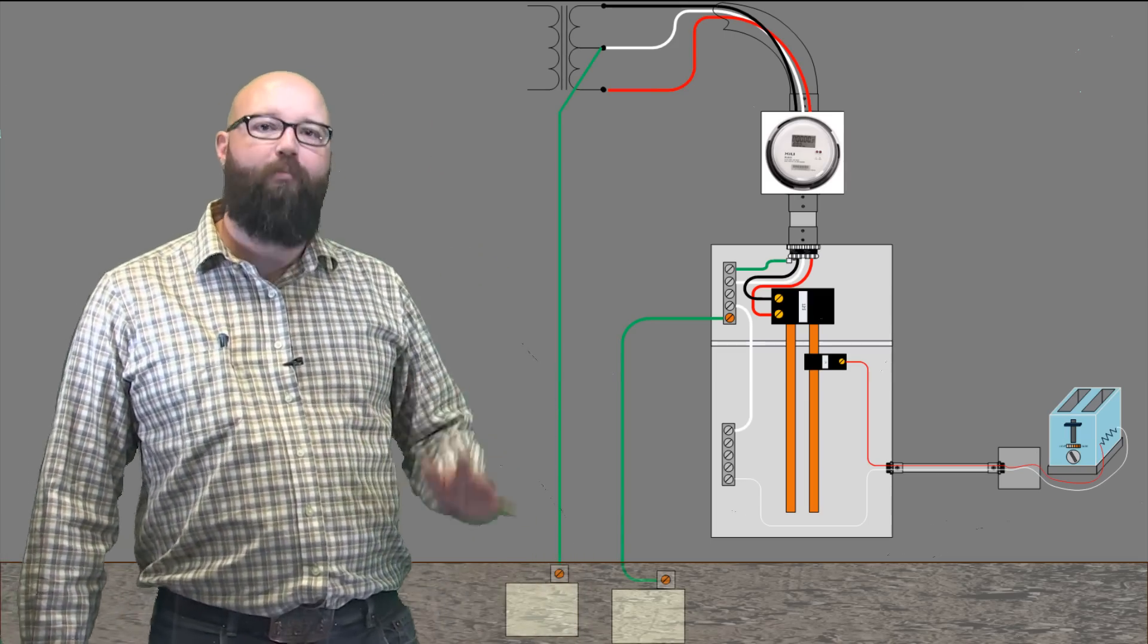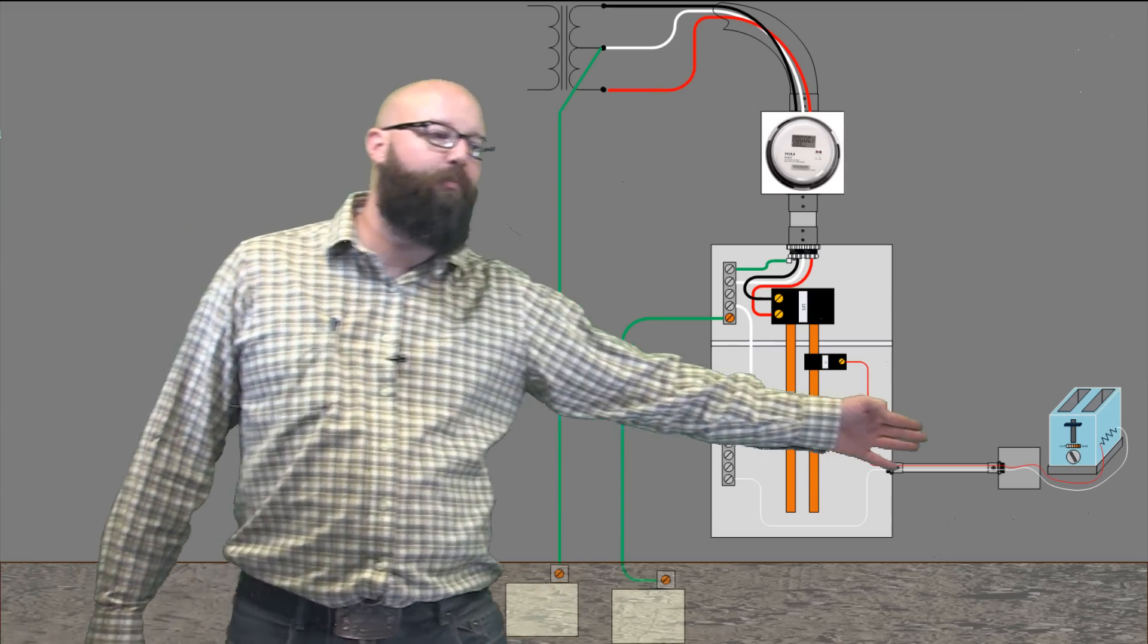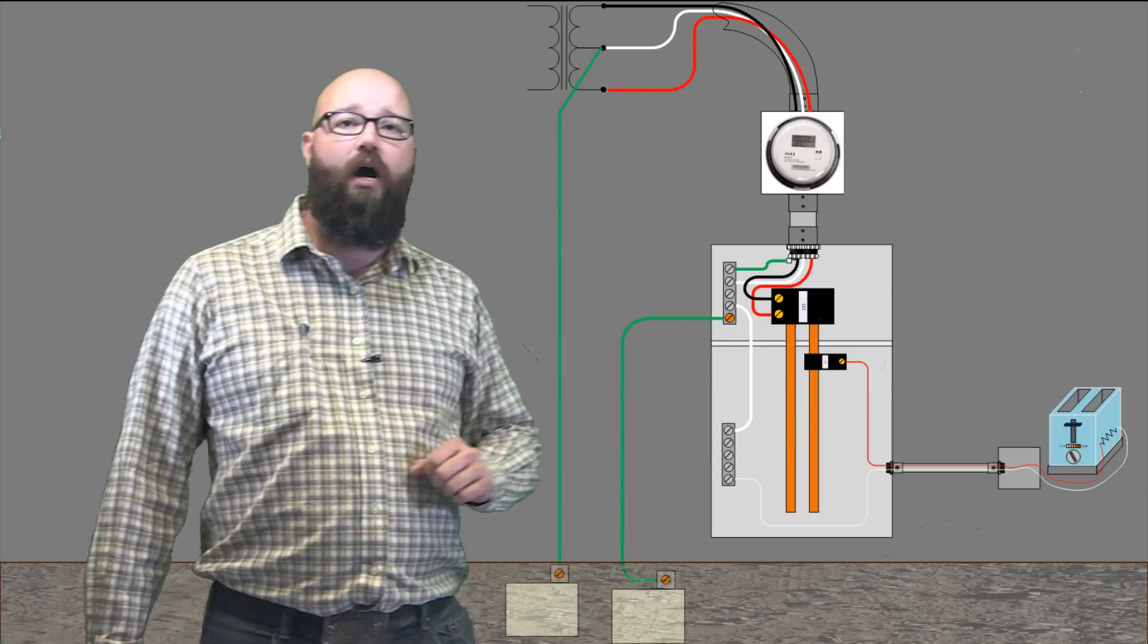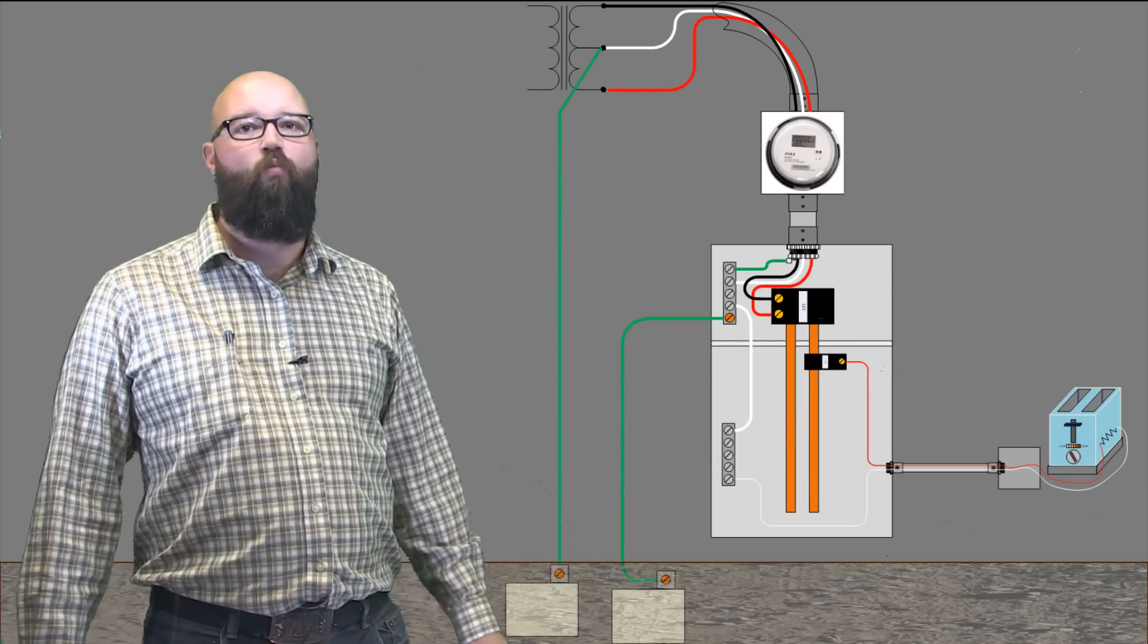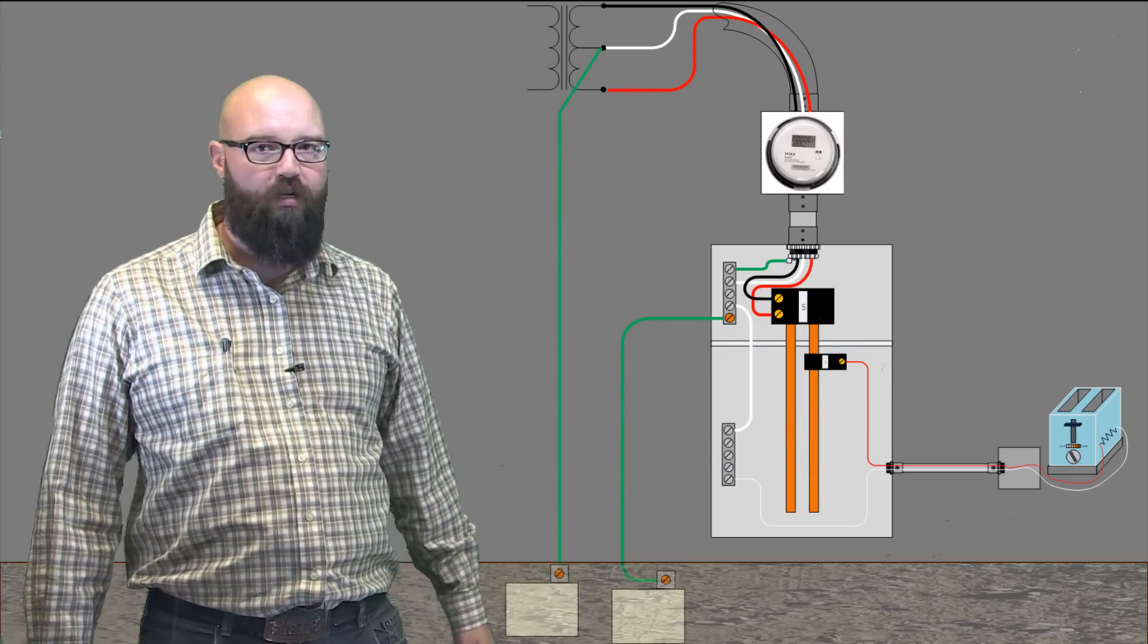What I want to do is walk through normal operation with a load, which we have represented here by our toaster, and then we want to run through operation when the system is in a ground fault condition.